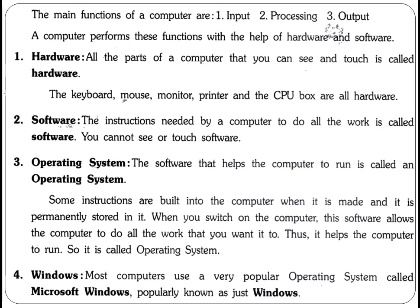Some instructions are built into the computer when it is made and are permanently stored in it. When you switch on the computer, this software allows the computer to do all the work that you want it to. It helps the computer to run, and so it is called an operating system. These instructions are built into the computer — that is the operating system.